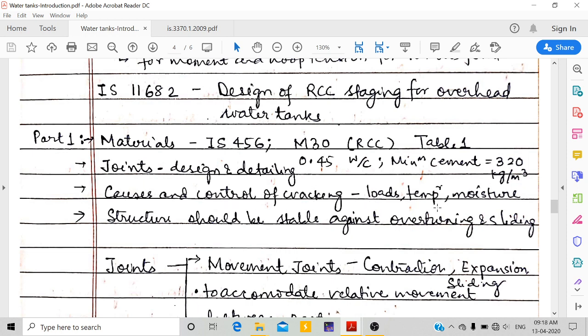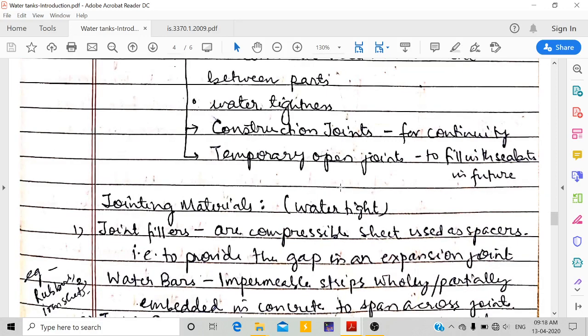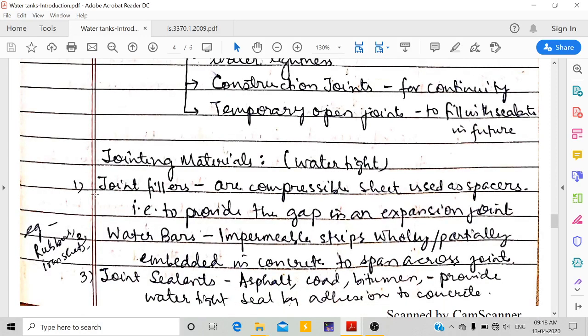This is also discussed - loads, temperature, moisture - and the structure should be stable against overturning and sliding. In case of joints, we have movement joints, construction joints, and temporary joints. Movement joints can be contraction, expansion, or sliding. Construction joints are for continuity when you cast today and tomorrow. Temporary open joints can be filled with sealants in future to accommodate relative movement between parts and maintain water tightness.